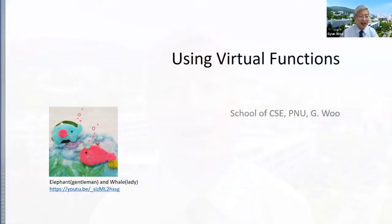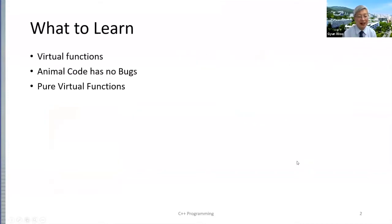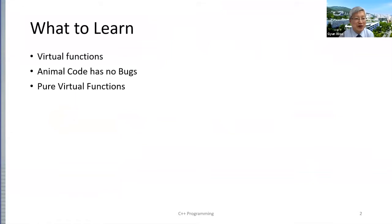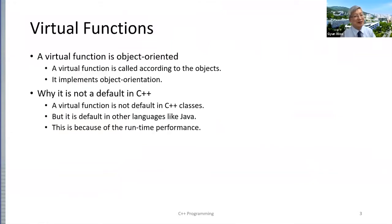Hi students. Elephant and whale is the issue of today. As you know, they can be called virtual — you have to learn what virtual functions are. The animal code has no bugs even though it is animal. Pure virtual functions may be explained in detail. A virtual function is object-oriented, meaning it is called according to the object type, so the actual object type is used rather than the superclass type.